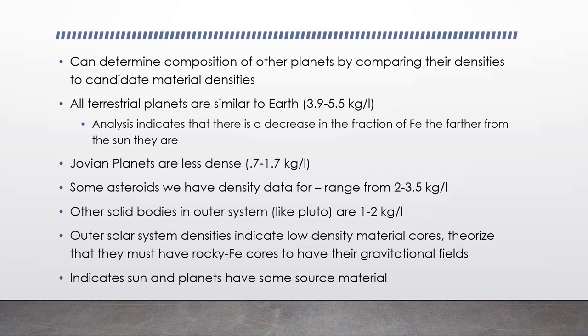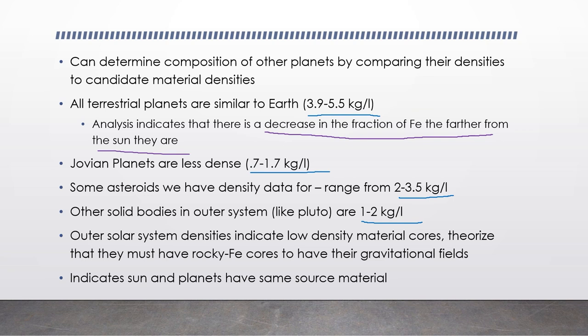All terrestrial planets have an average density between 3.9 and 5.5 kg/L, similar to Earth's. The Jovian planets are much less dense at 0.7 to 1.7 kg/L, more similar to ices. Asteroids range from 0.2 to 3.5 kg/L, and other solid outer bodies like Pluto range from 1 to 2 kg/L. Terrestrial planets have a decreasing fraction of iron the farther they are from the sun, while outer solar system densities suggest low-density material, though scientists theorize they have Earth-sized rock and iron cores.